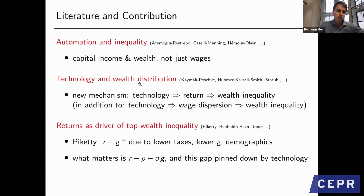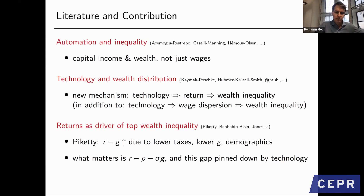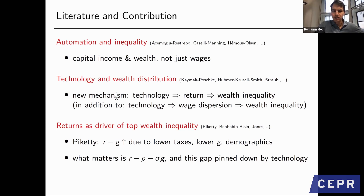Briefly on our contribution to the literature: there's a literature on automation and inequality, including co-author Pasquale's work with Acemoglu. The key contribution relative to that literature is that we talk not just about wage inequality—labor income—but also capital income and wealth. More generally there is existing literature linking technological change to wealth distribution, but those mechanisms work through relative wages. Our new mechanism is that technology affects returns to wealth, which is absent in the existing literature.